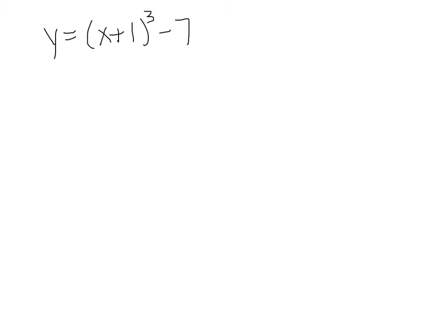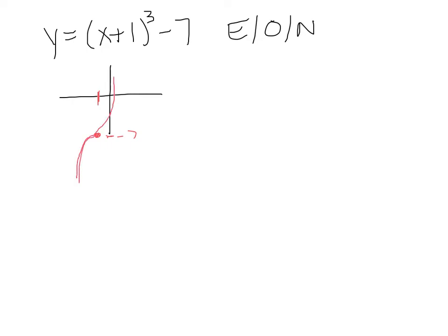Let's look at y = (x + 1)³ - 7 and determine whether it's even, odd, or neither. Since the power is 3, an integer, we can classify it. The graph has been shifted left 1 and down 7 with a cubic S shape. While our tendency might be to say it's odd, it's actually not odd because it is not symmetric about the origin — so it's neither.